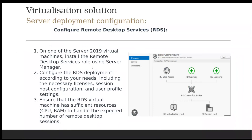For remote desktop service, on one of the virtual machine servers, install the remote desktop server role using Server Manager. Configure the RDS deployment according to your needs, including the licensing service and session host. It sounds complicated, but once you start doing it, the Windows installation has a lot of help information which makes it easy to follow and to debug any problems. Ensure that the RDS virtual machine has sufficient CPU resources to handle the load.